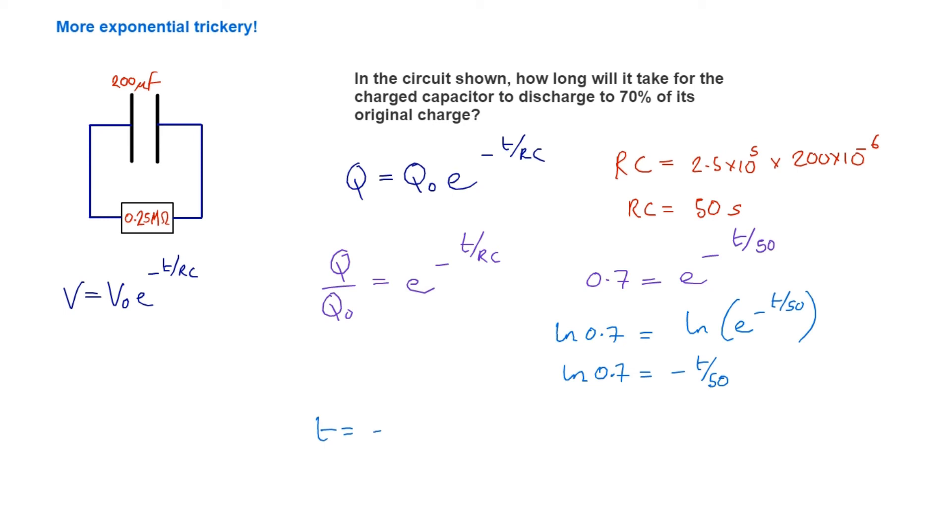t, therefore, is going to be -50 × ln(0.7). If we evaluate that, we get 17.8 seconds.